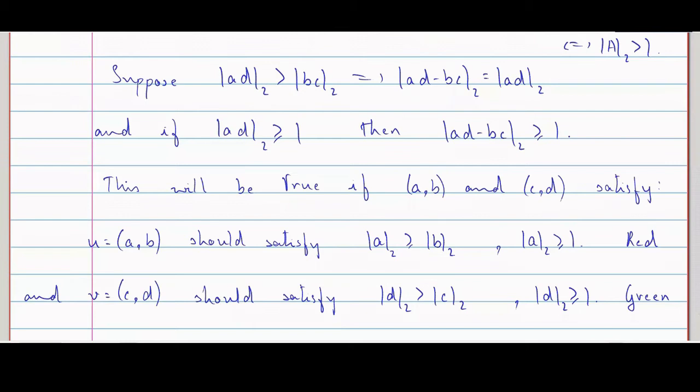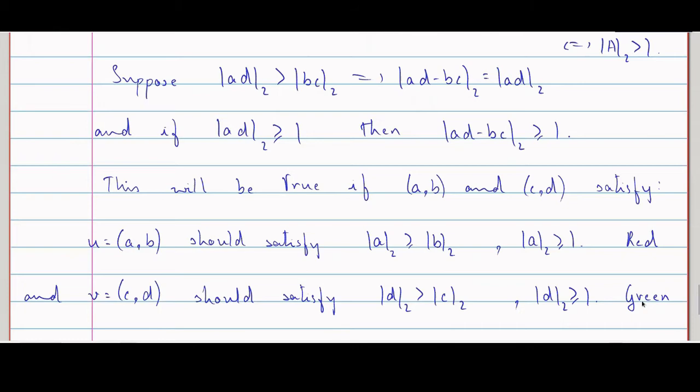If the point (a,b) is red and the point (c,d) is green — or the other way around — then the area has 2-norm bigger than 1. That is what we have seen so far.